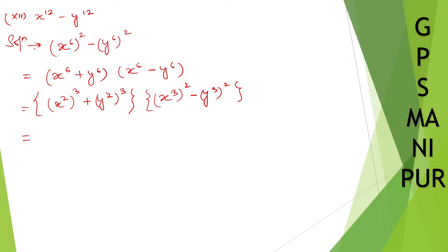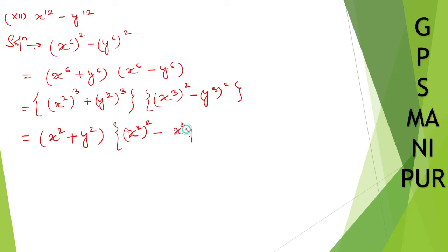So for a cube plus b cube, let us write x squared plus y squared as a plus b. Applying the a cube plus b cube formula: that gives a plus b times a squared minus ab plus b squared. So here we get x squared plus y squared, then a squared minus ab, which is x squared times y squared, plus b squared, which is y squared whole square. Here I am taking x squared as a and y squared as b and applying the formula.